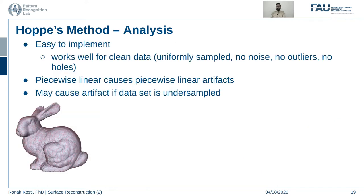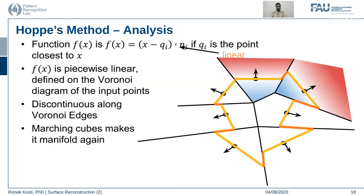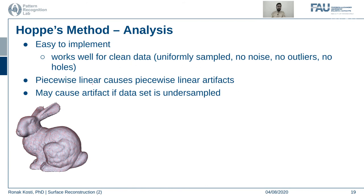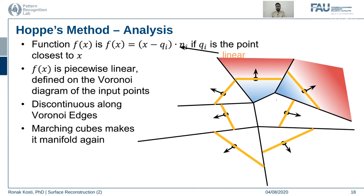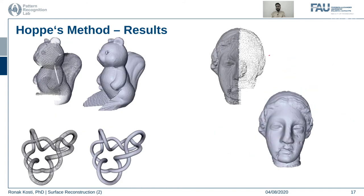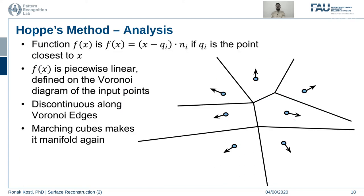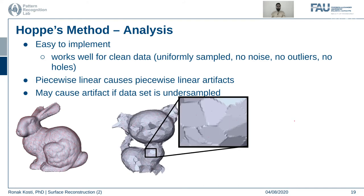The advantages of Hoppe's method are that it is easy to implement and works well on clean, well-sampled data with no noise or outliers. However, it is a linear approximation — piecewise linear — and will cause piecewise linear artifacts if the data is undersampled. If the data is very sparse, while it can still recreate surfaces reasonably, there are issues with finer details. If data is missing, noisy, or not uniformly sampled, it will not work as well.